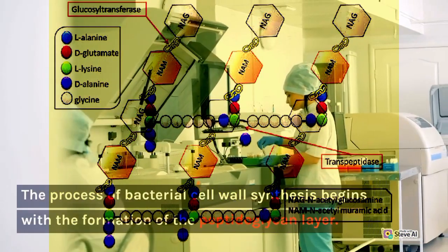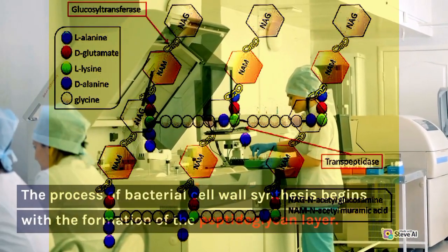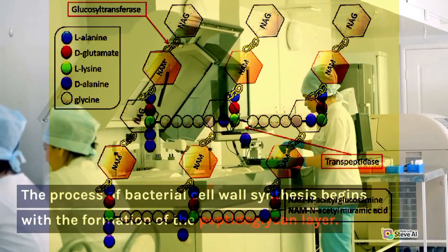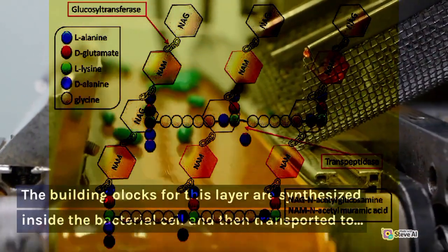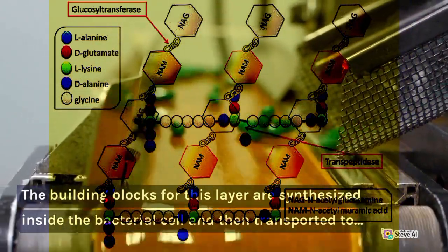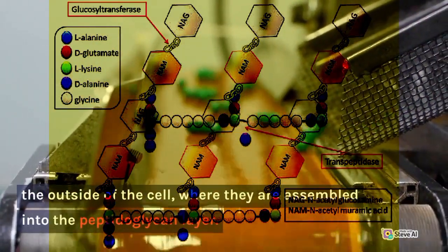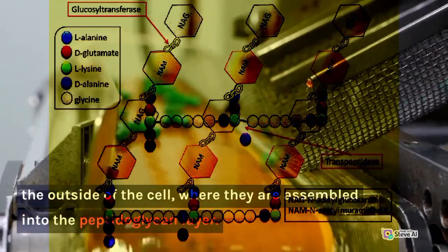The process of bacterial cell wall synthesis begins with the formation of the peptidoglycan layer. The building blocks for this layer are synthesized inside the bacterial cell and then transported to the outside of the cell, where they are assembled into the peptidoglycan layer.